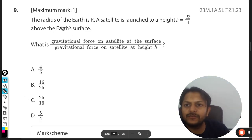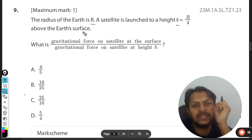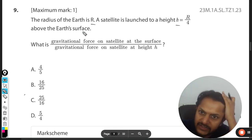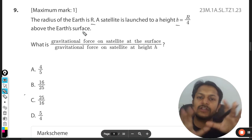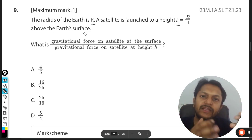Today let's see what is in this question. The radius of Earth is R. A satellite is launched to a height h = R/4 above the Earth's surface. What is the gravitational force on the satellite at the surface divided by the gravitational force on the satellite at height h?